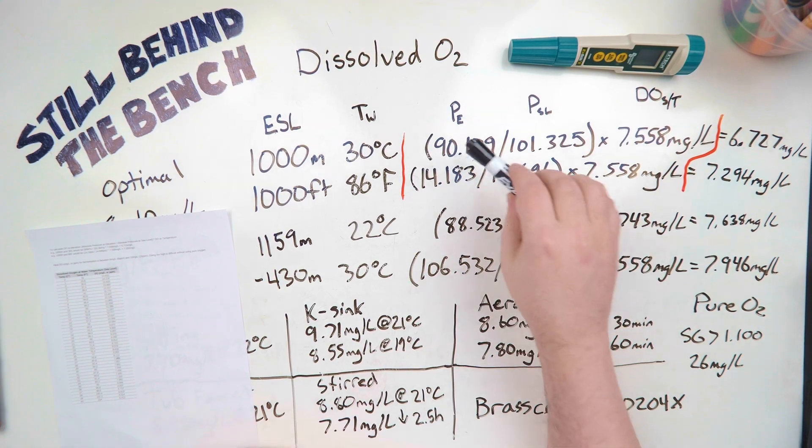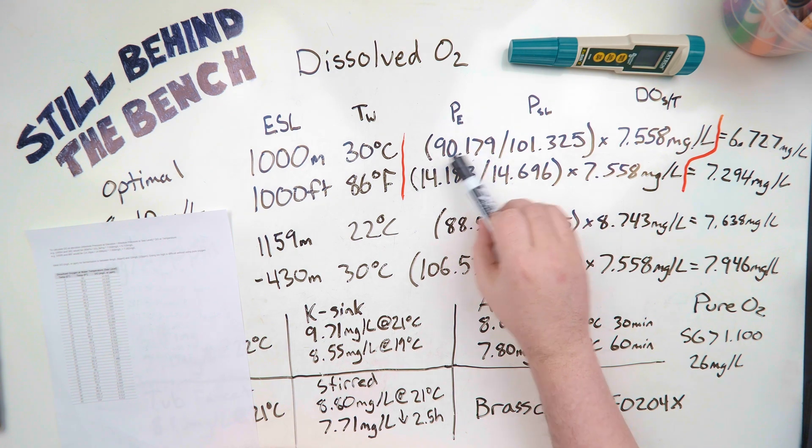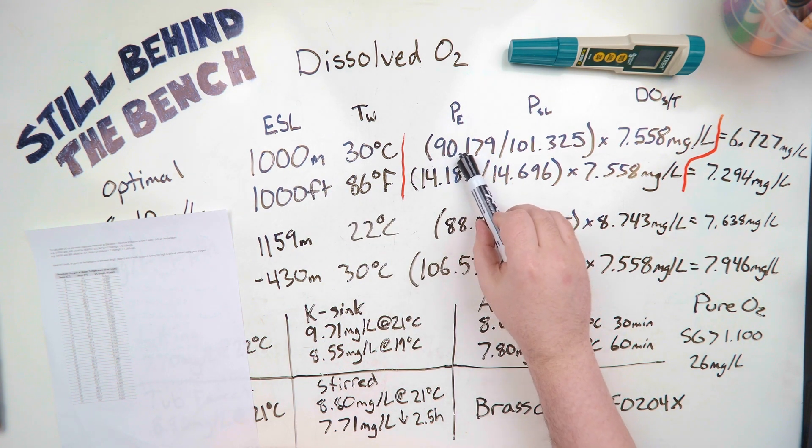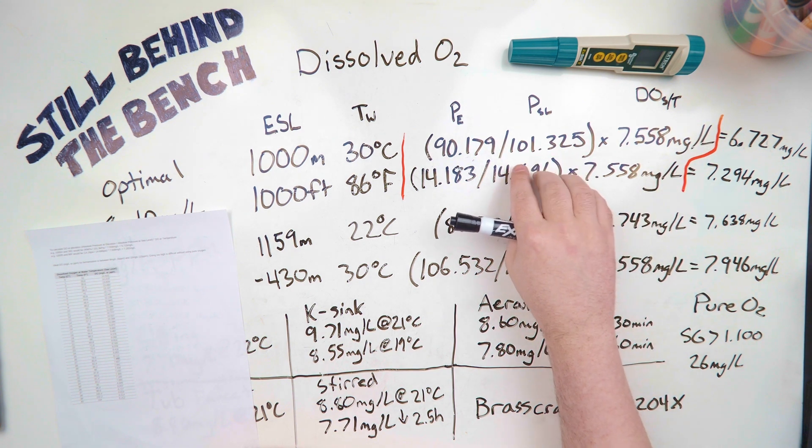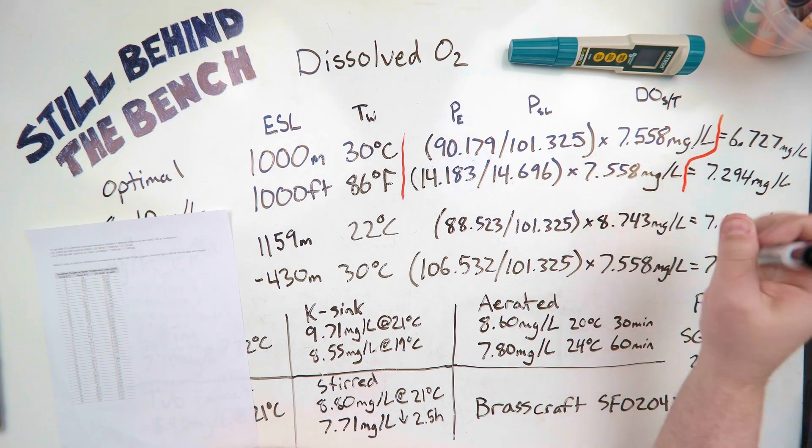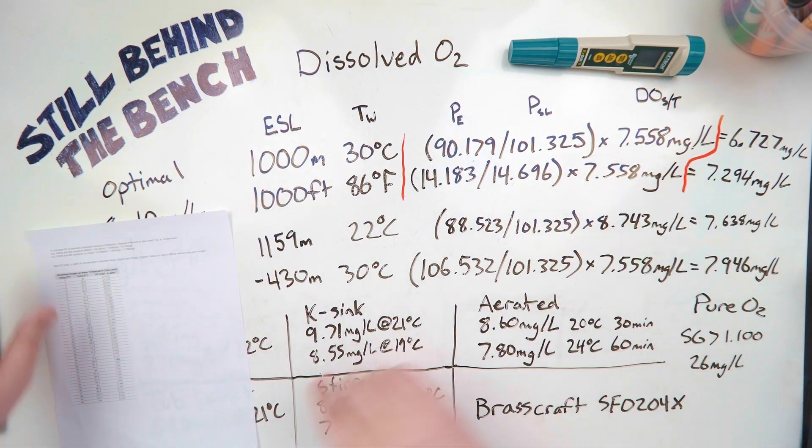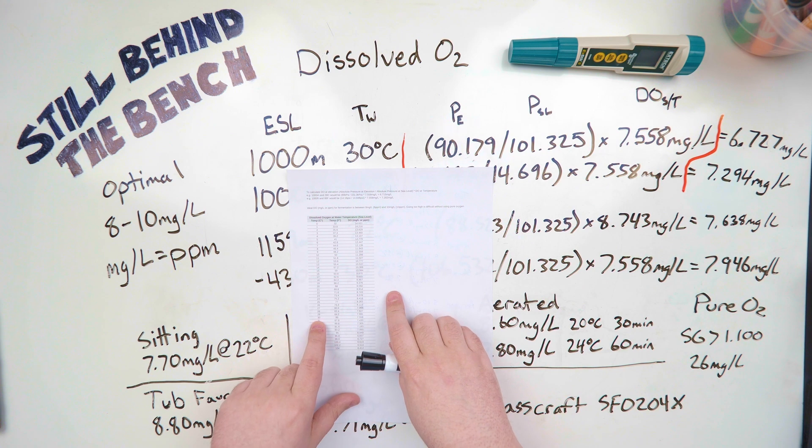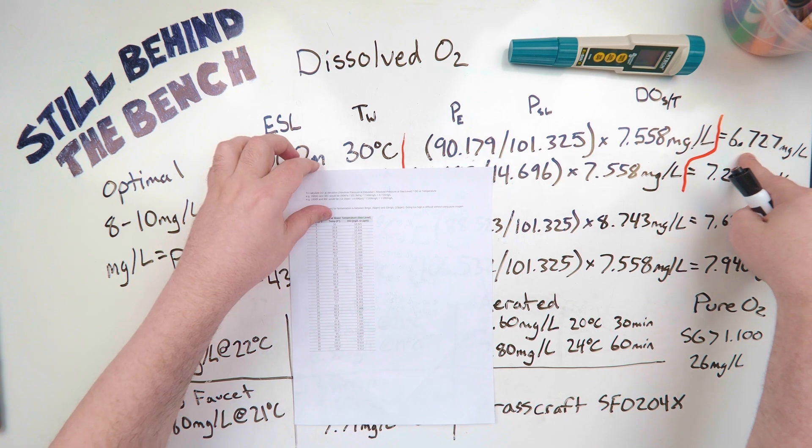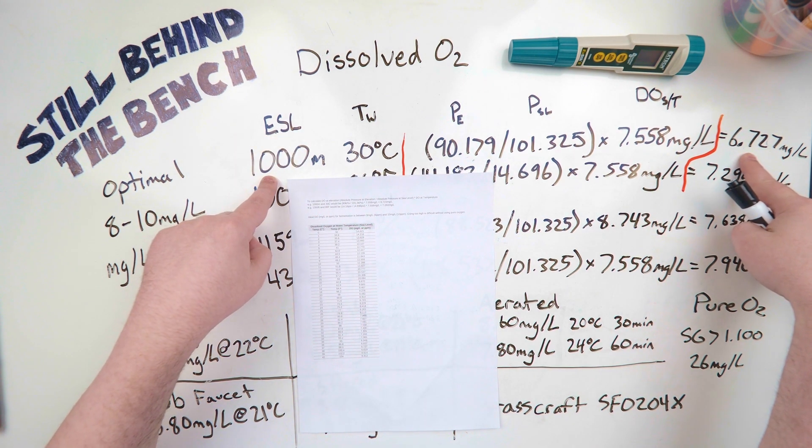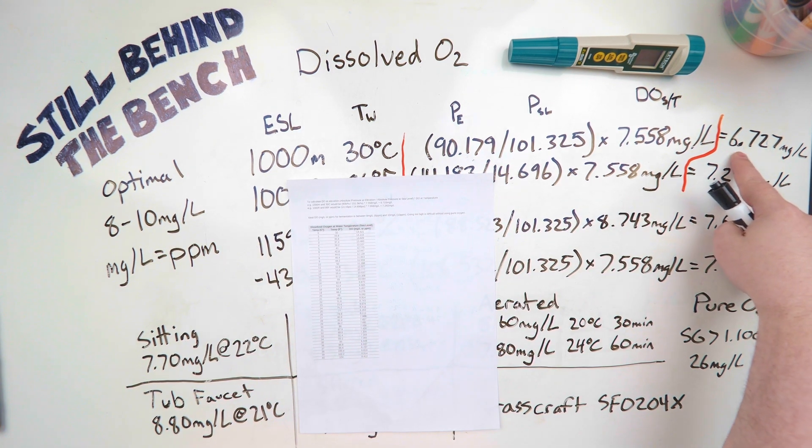The formula is pretty simple. Essentially it is the part here in red. You're going to be taking the air pressure at your elevation, at a thousand meters in kilopascals, it's 90.179 kilopascals, dividing it by the air pressure at sea level, which is 101.325 kilopascals, times how much dissolved oxygen would be in the water if the water is 30 degrees celsius at sea level. So you get that value from this chart, 30 degrees celsius, 7.558 milligrams per liter. That means this bucket of water sitting at a thousand meters above sea level, the temperature of the water is 30 degrees celsius, it's going to have 6.727 milligrams per liter.